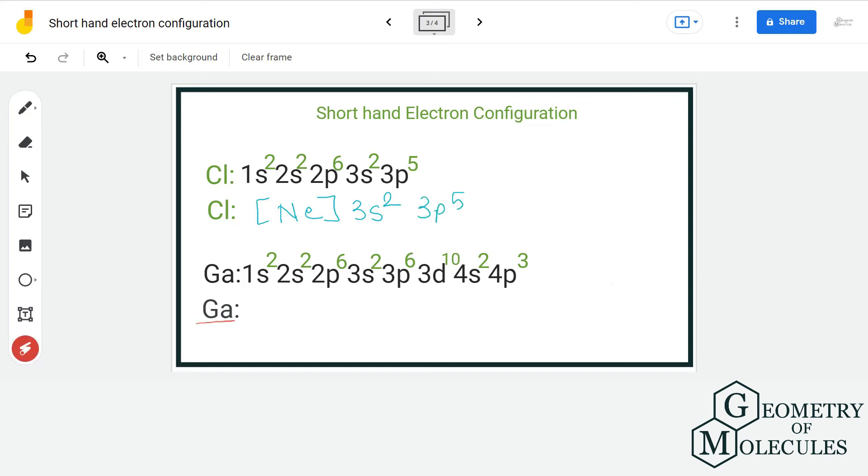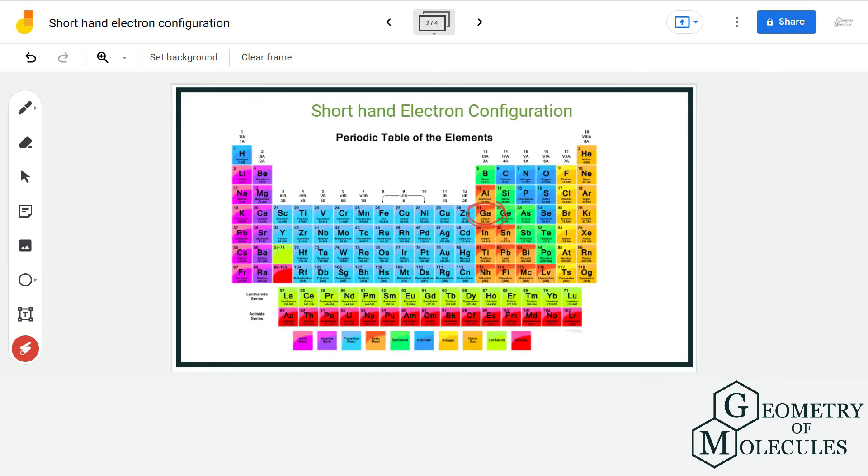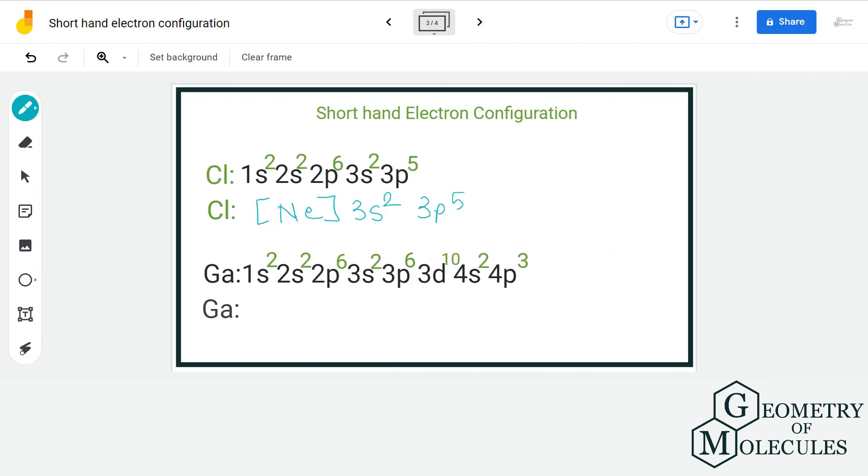The next example is of gallium. It is located in p block here. The noble gas before it is argon that has 18 electrons. So, up to 3p6, it is the electronic configuration of argon. The final electronic configuration of gallium is argon which is put in bracket and then we will write 3d10 4s2 4p1.